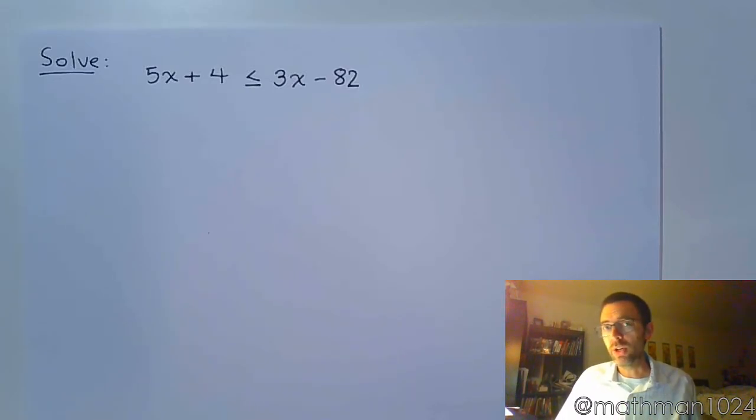In these examples of linear inequalities, we're just going to add a couple more steps. You solve these just like you would solve a linear equation, with the one exception that if you multiply or divide both sides by a negative, the inequality symbol's going to flip around.